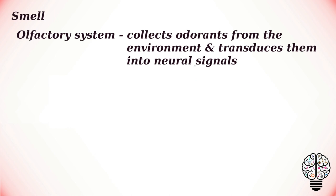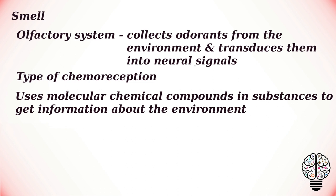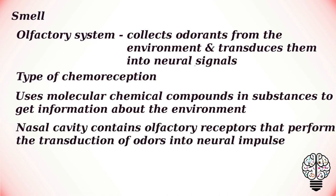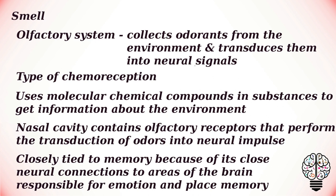The next is the olfactory system, which gives humans their sense of smell by collecting odorants from the environment and transducing them into neural signals. Olfaction is a type of chemoreception. Like gustation, this sensory system uses the molecular chemical components in substances to get information about the environment. The main sensory organ responsible for the human sense of smell is the nasal cavity, which contains the olfactory receptors that perform the transduction of odors into neural impulses. Olfaction is the sense most closely tied to memory because of its close neural connections to areas of the brain responsible for emotion and place memory. The olfactory nerve connects the olfactory system to the central nervous system to allow processing of odor information. Humans can differentiate between 10,000 different odors.